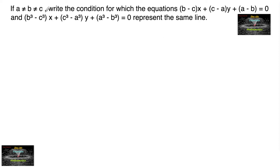If a is not equal to b, not equal to c, write the condition for which the equations (b minus c)x + (c minus a)y + (a minus b) = 0 and (b³ minus c³)x + (c³ minus a³)y + (a³ minus b³) = 0 represent the same line.